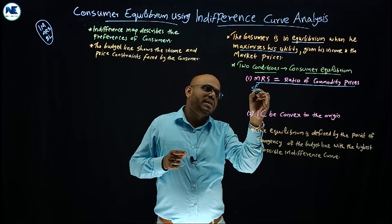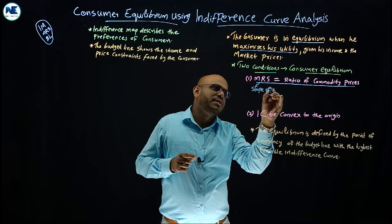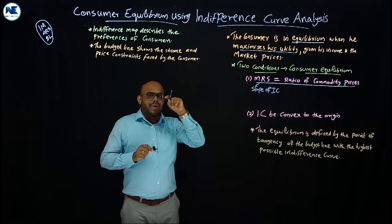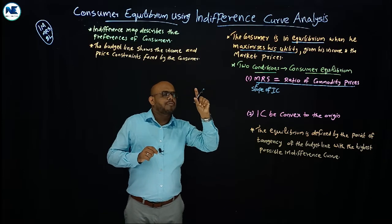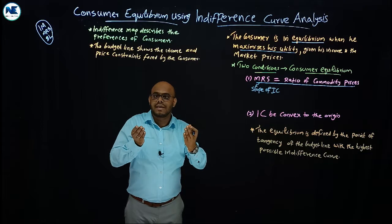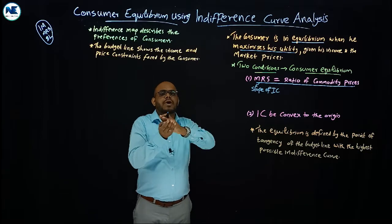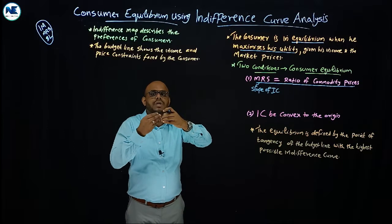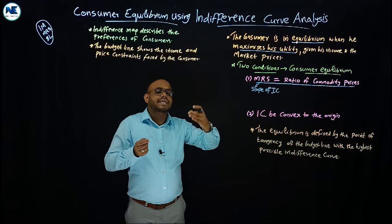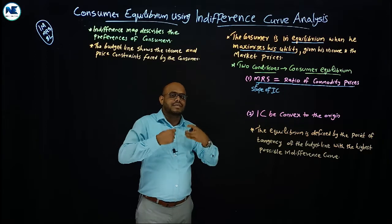The slope of the indifference curve is the marginal rate of substitution, MRS. Marginal rate of substitution of X for Y — which we have already discussed — refers to the amount of commodity Y the consumer is willing to give up in order to obtain an extra unit of commodity X.